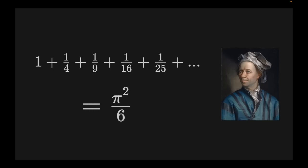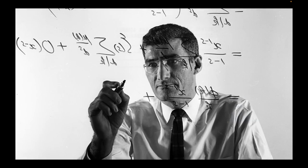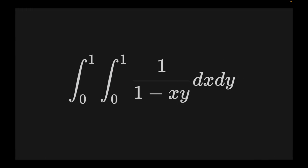Since then multiple proofs for the Basel problem have been found, and today we're going to look at a very special one: the proof proposed by the mathematician Tom Apostol. Tom Apostol's proof starts with a specific integral, which we dealt with in a previous video, showing that the integral is equal to the sum of the inverse squared natural numbers — also known as the zeta function at the value 2.